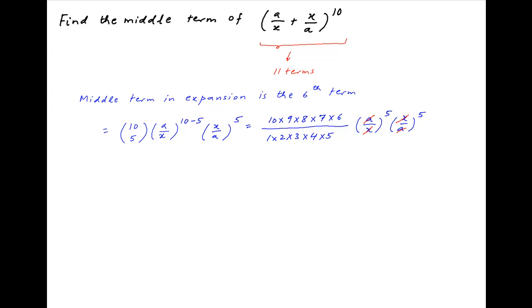Terms with a and x cancel out, and the constant terms also simplify, resulting in 3 times 2 times 7 times 6, which equals 252, which is the required answer.